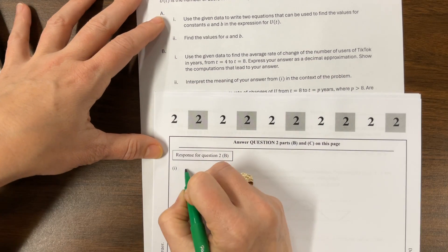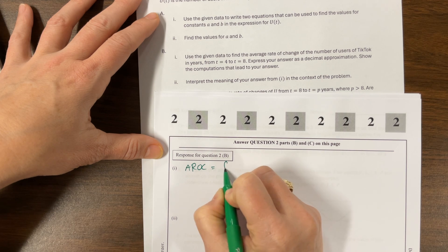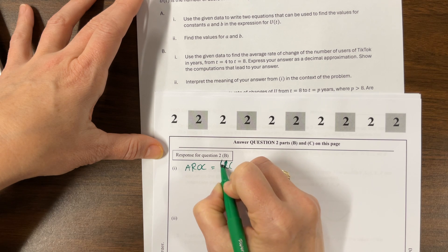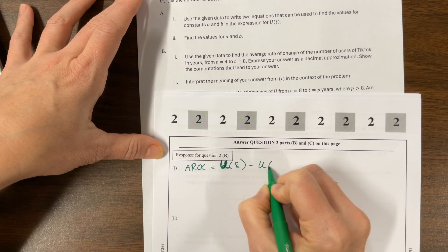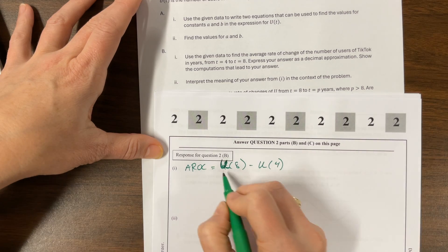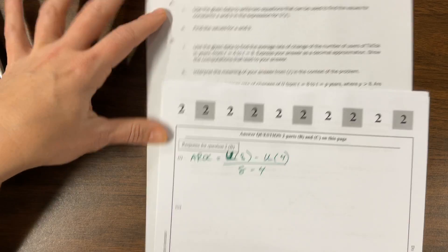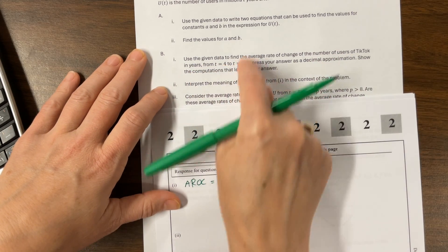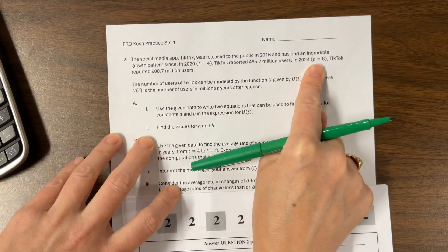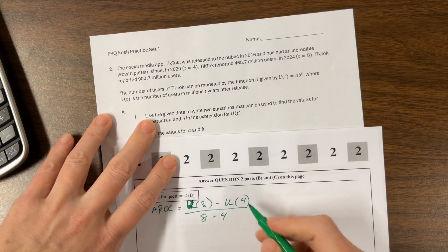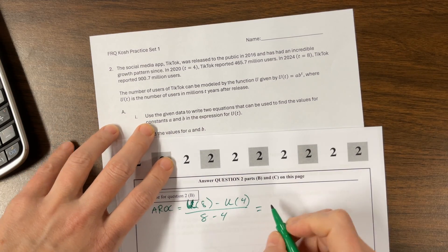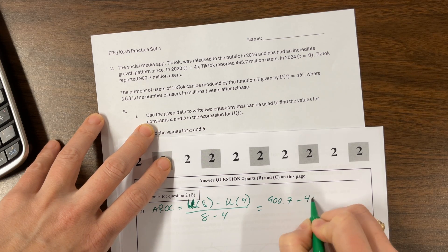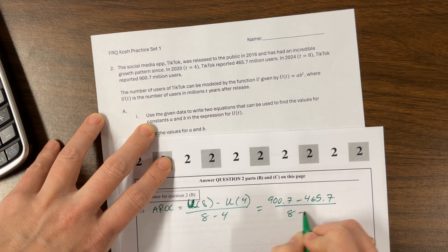So what I'm doing here, average rate of change would be equal to U of eight minus U of four divided by eight minus four. So U of eight, we had this value of 900.7 minus 465.7, all over eight minus four.